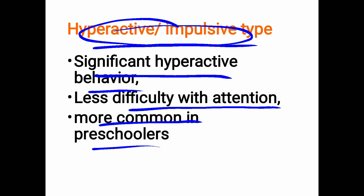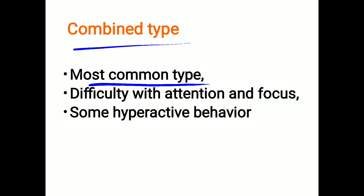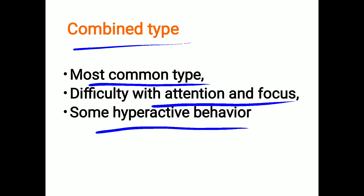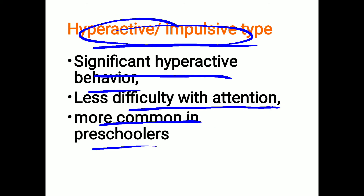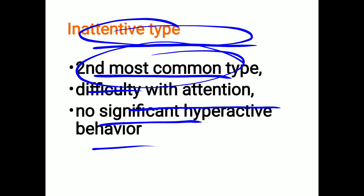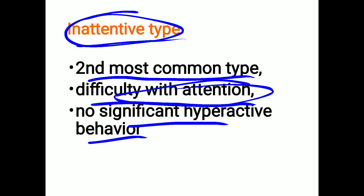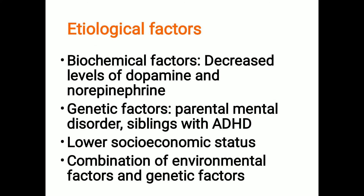The combined type is the most common, the inattentive type is the second most common, and the hyperactive type is the least common. In the combined type, there is both difficulty with attention and hyperactive behavior — a combination of both.